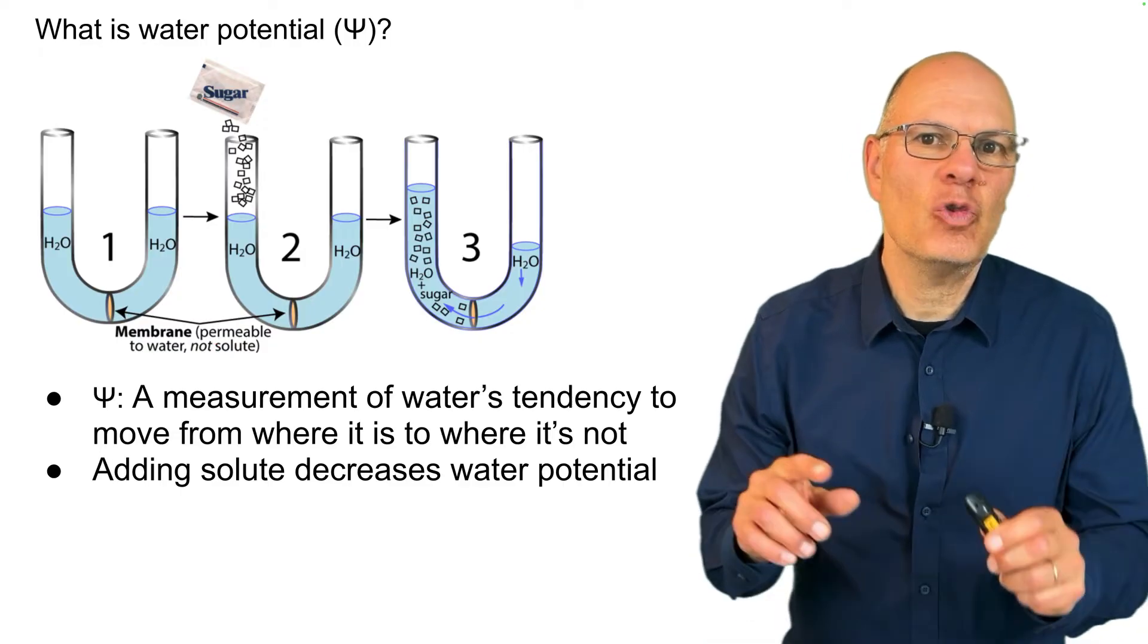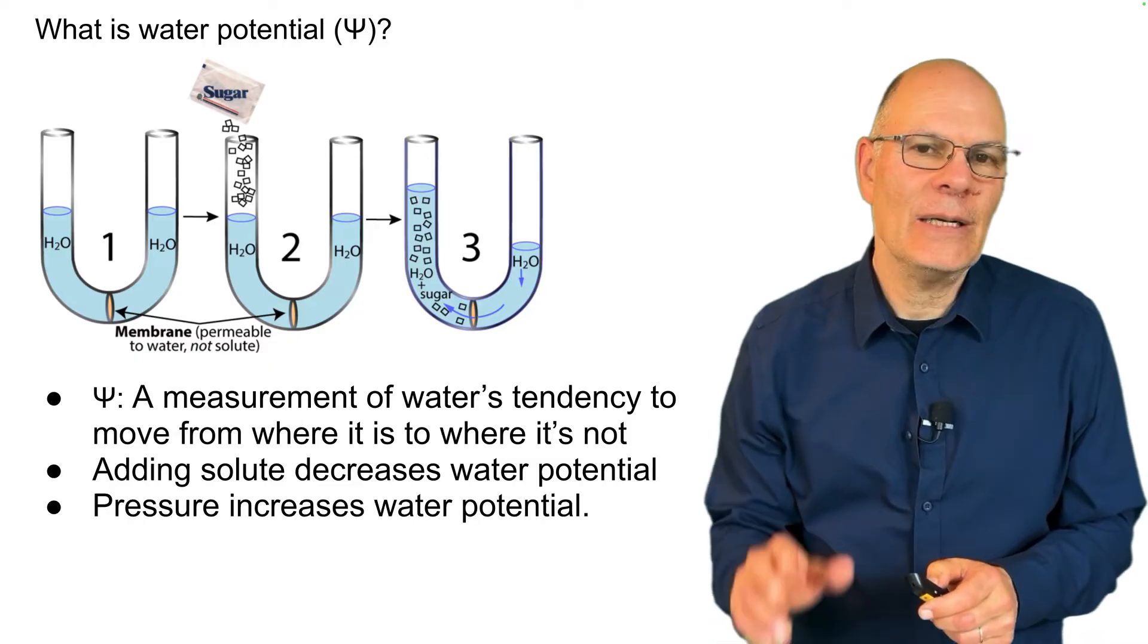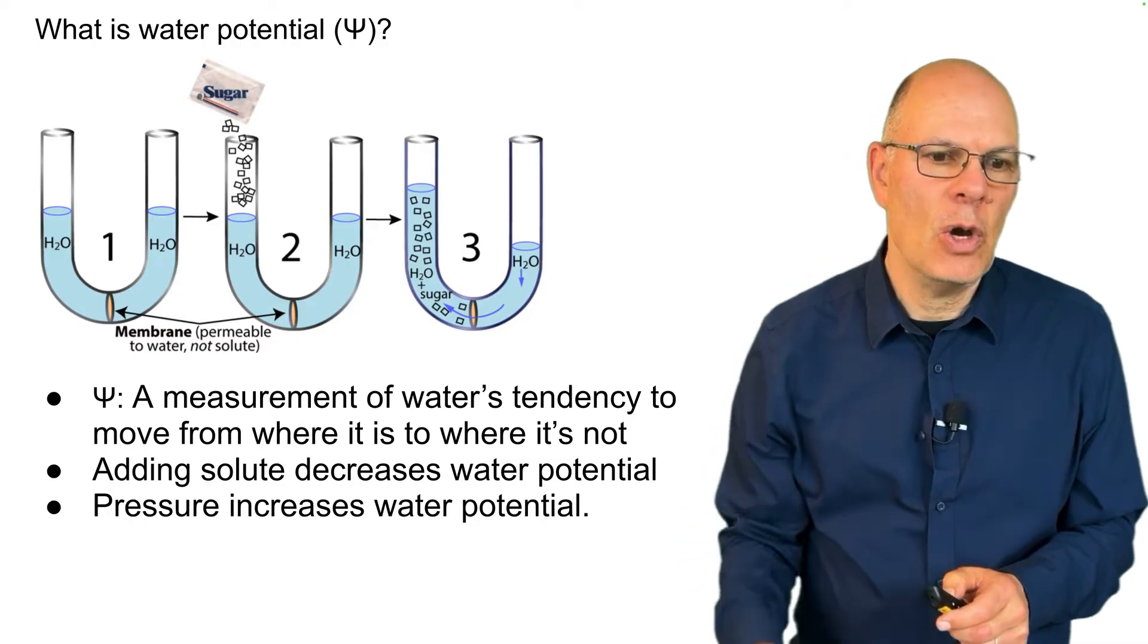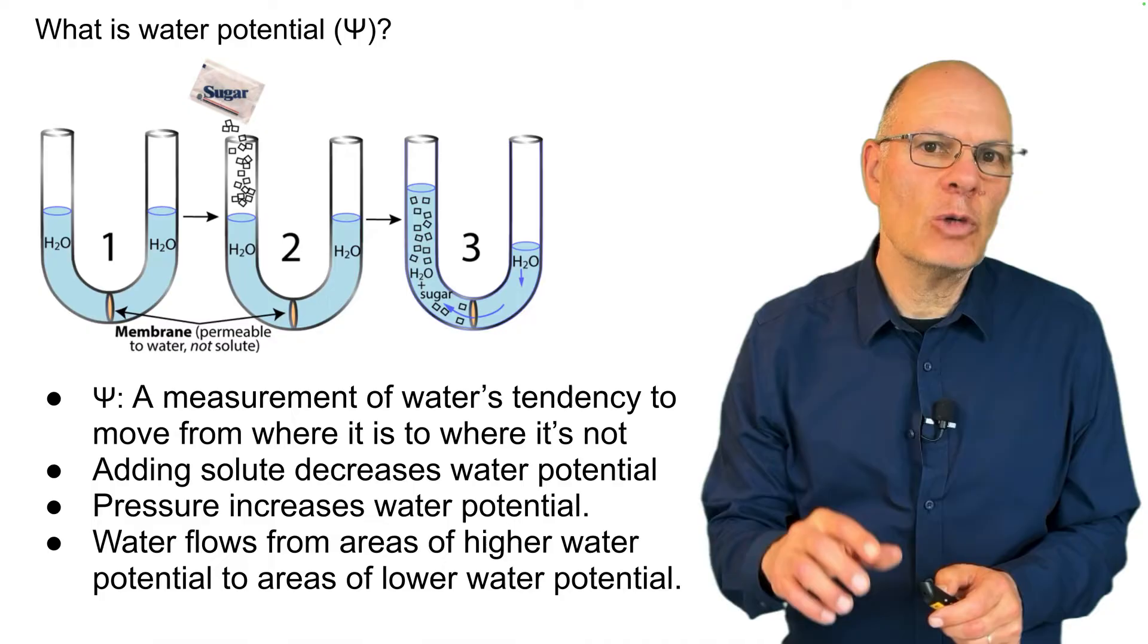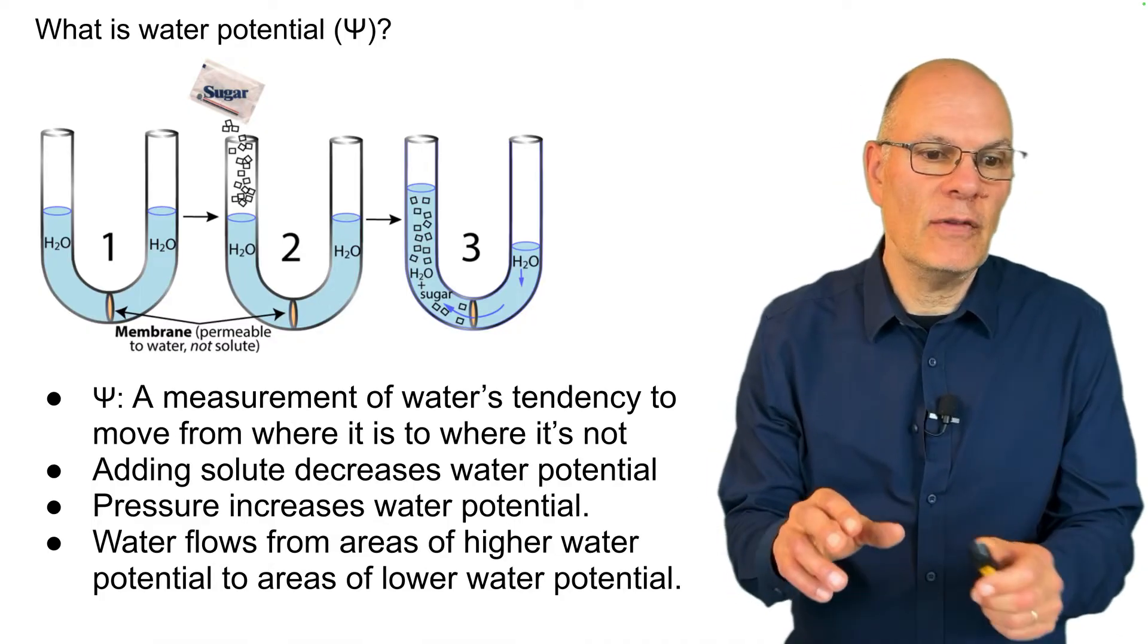Adding solute decreases a body of water's water potential. Adding pressure increases water potential. And water will flow from areas of higher water potential to areas of lower potential.